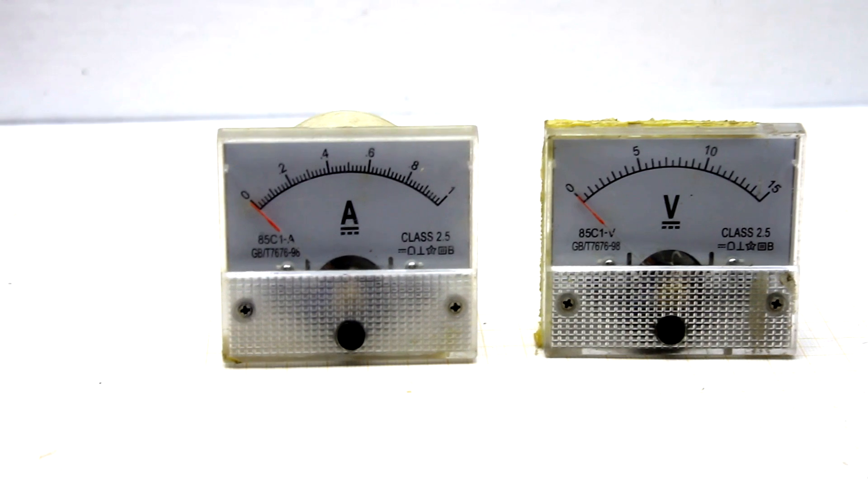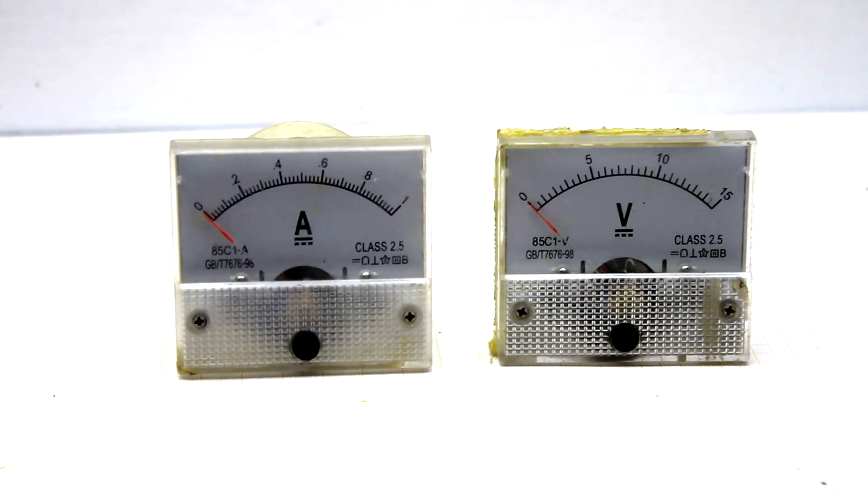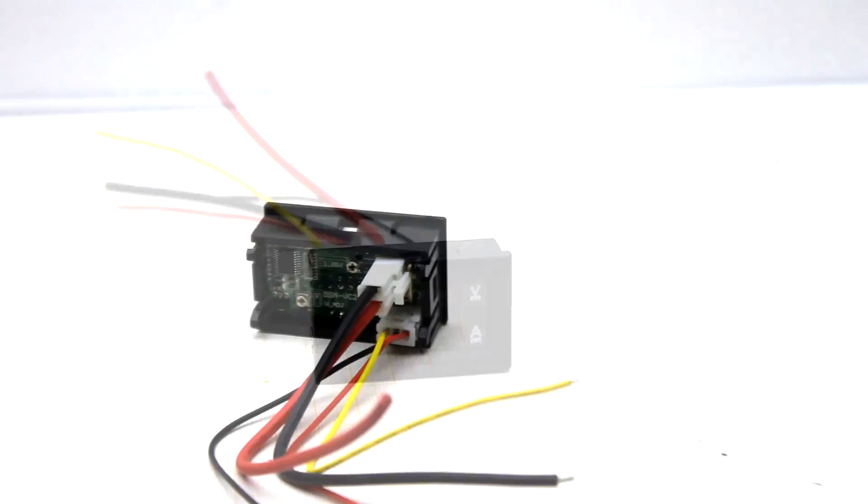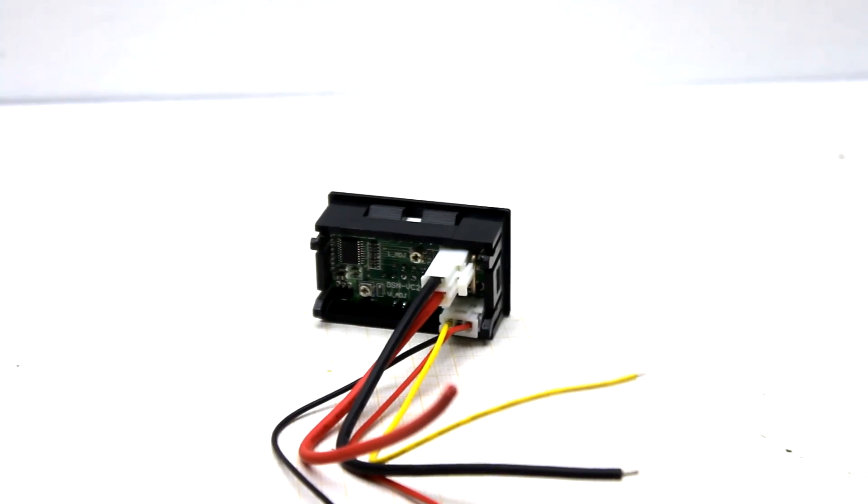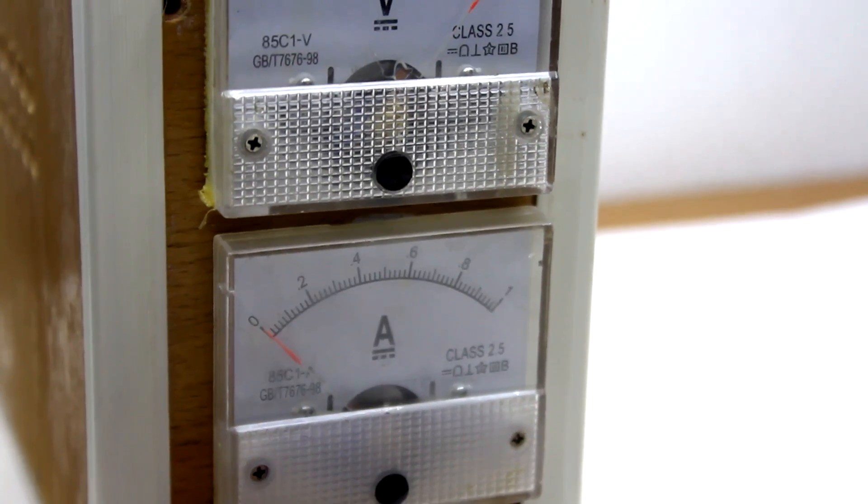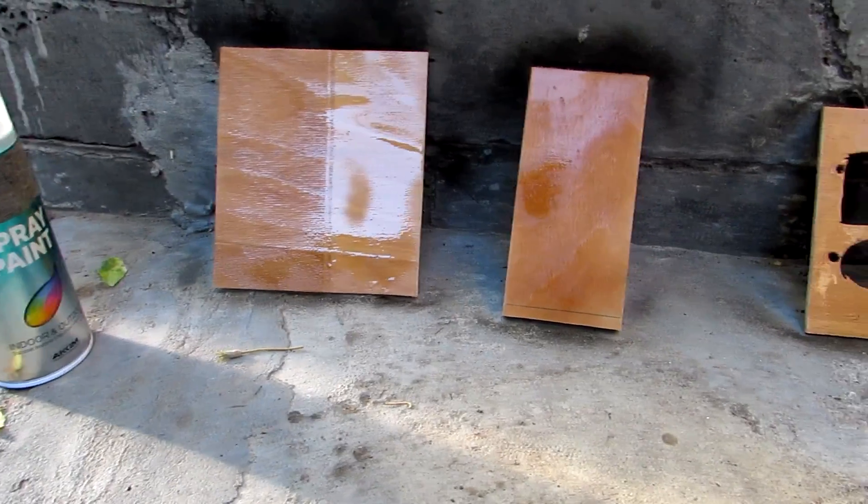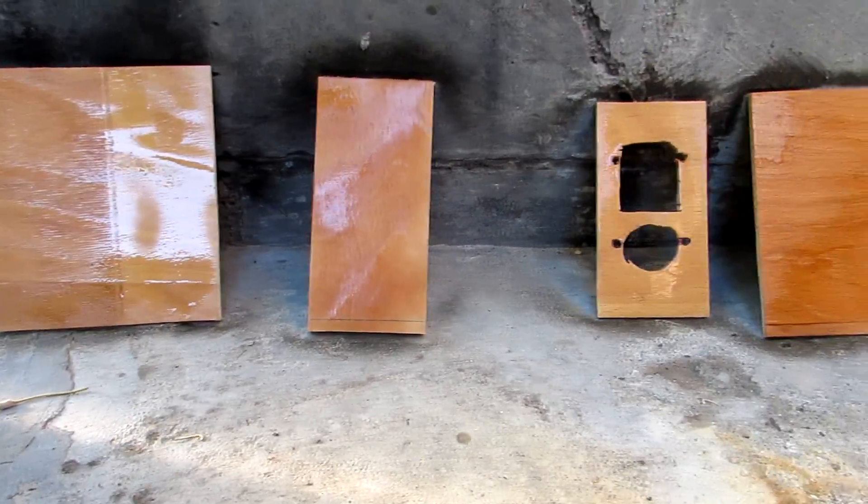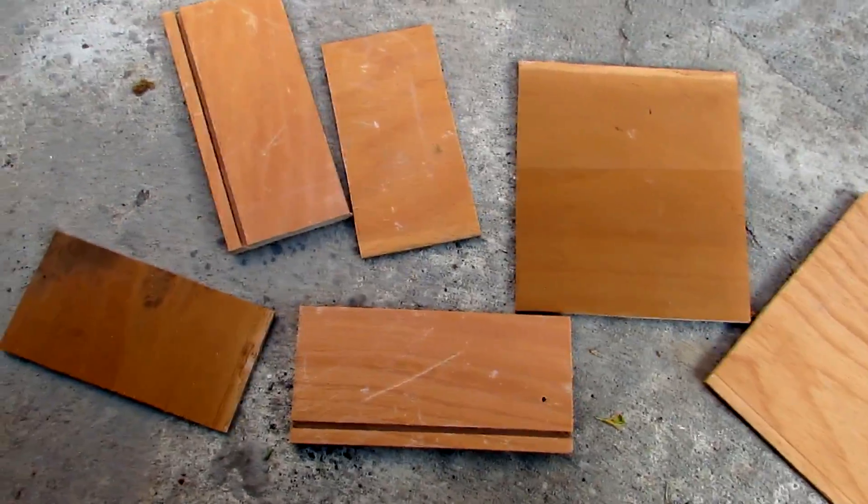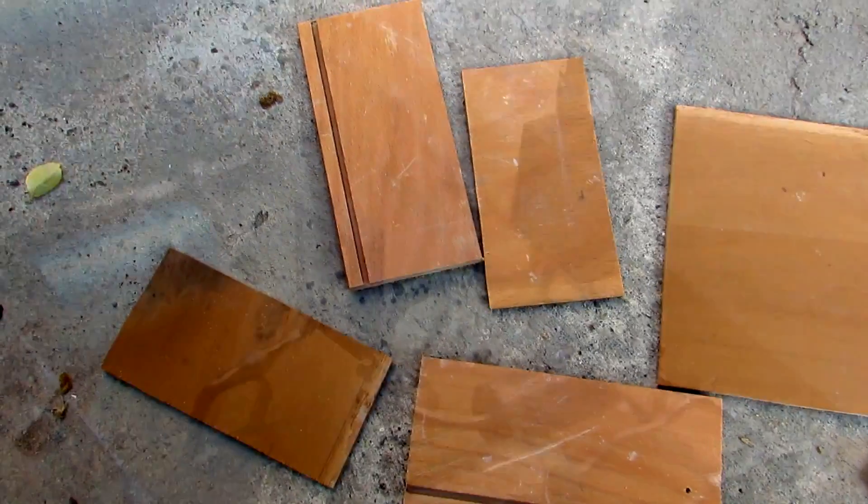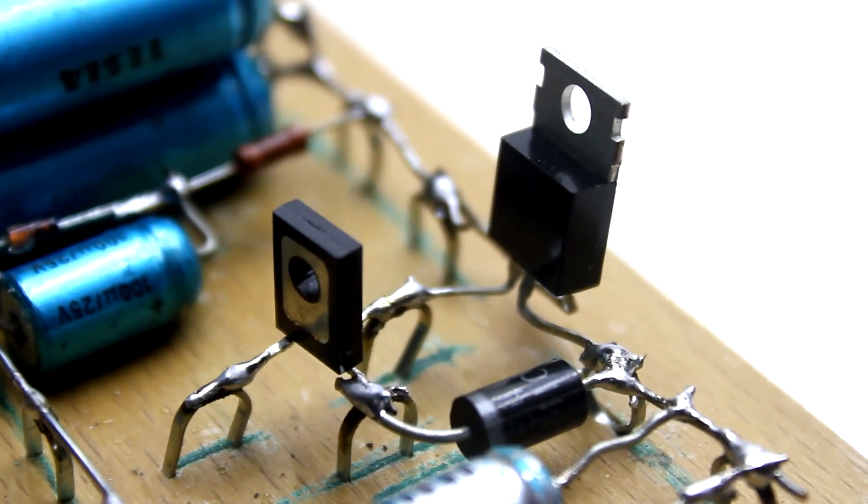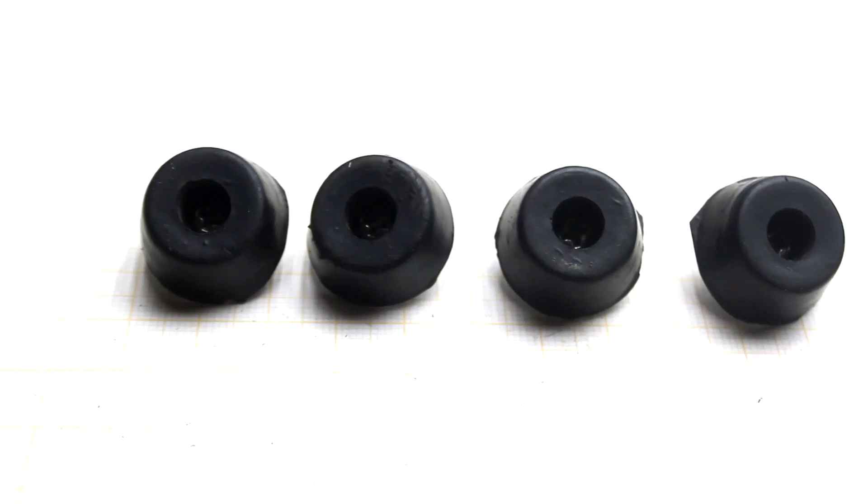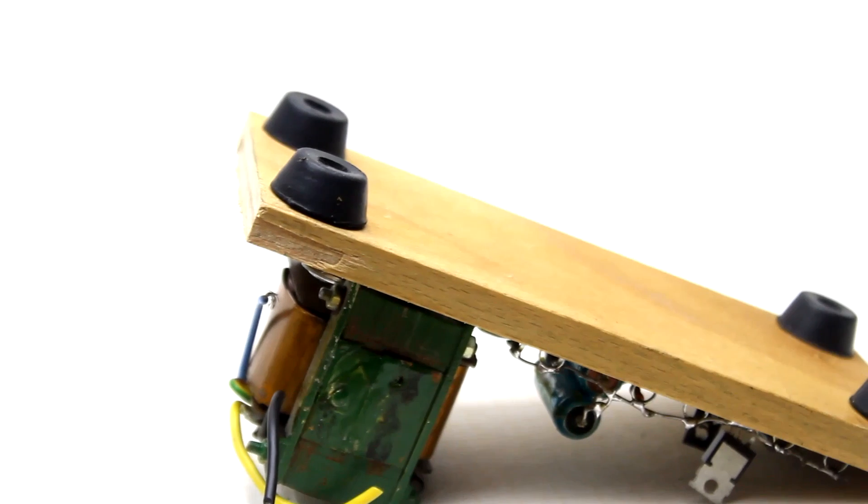I use the voltmeter and ammeter with a pointer, but nothing prevents you from using modern digital indicators. The box is completely made of 3mm plywood, which was additionally treated with sandpaper and varnished. Next is the process of assembly. This stage is not worth commenting, so enjoy the pleasant music. The link to the channel of the author of the music will be found in the description.